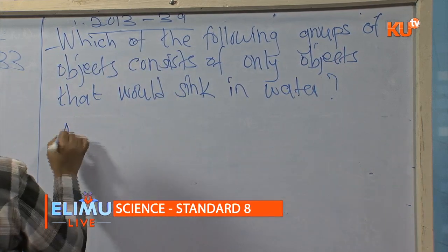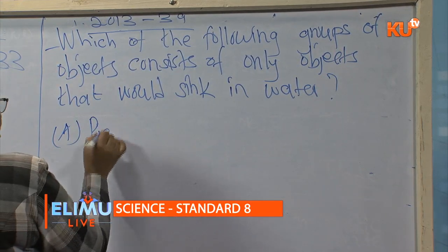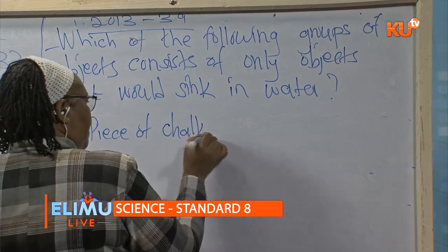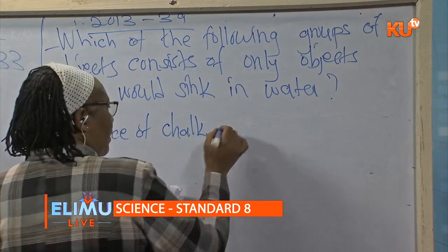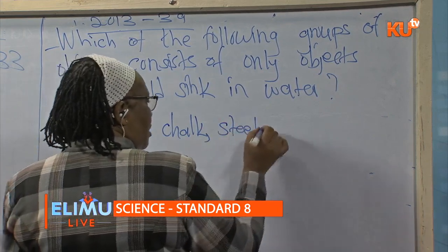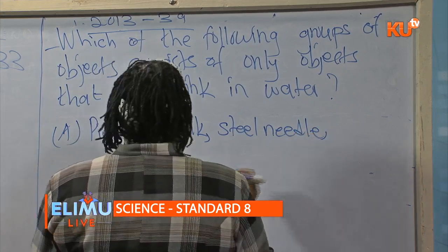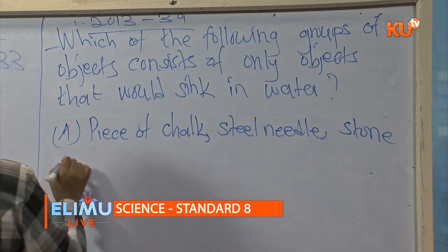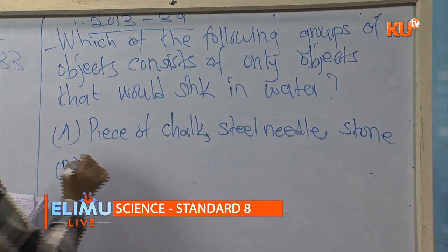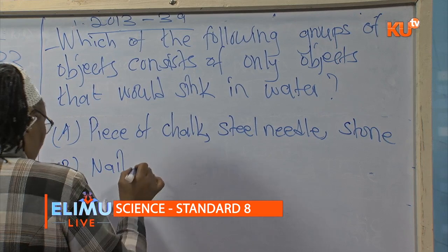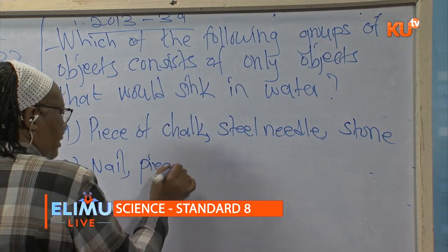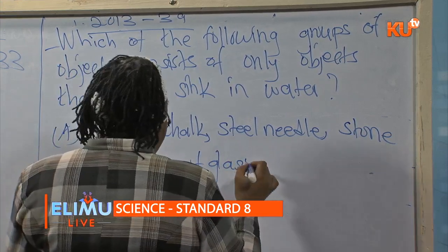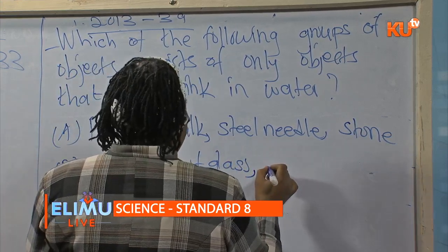Choice B: a nail, a piece of glass, and a stone. Choice C: a nail, a cork, and a piece of chalk. Choice D: a piece of chalk and a plastic bottle.